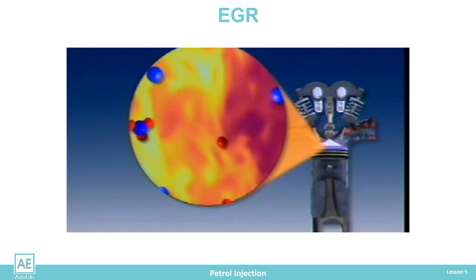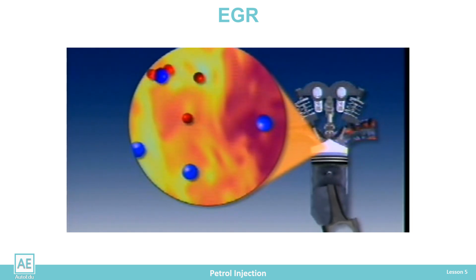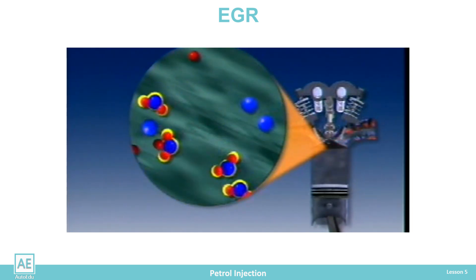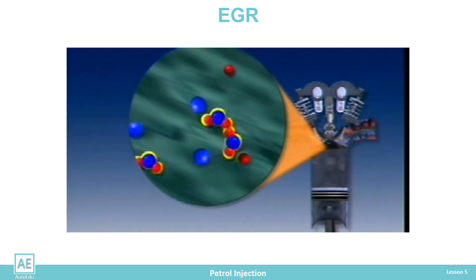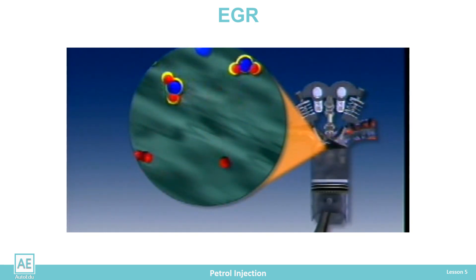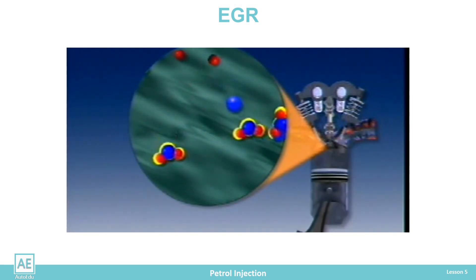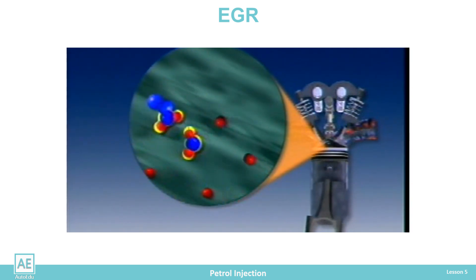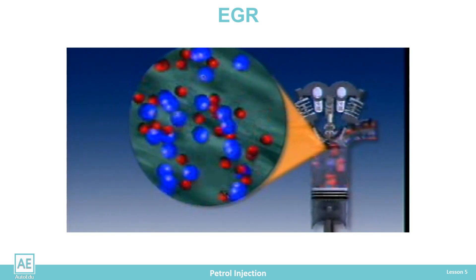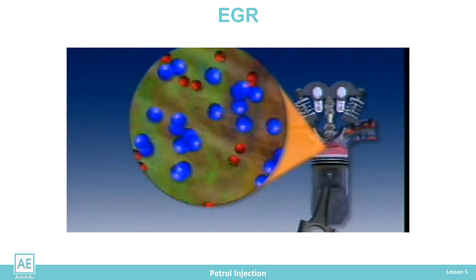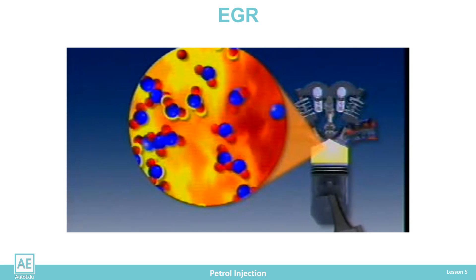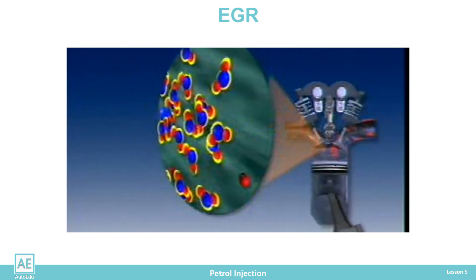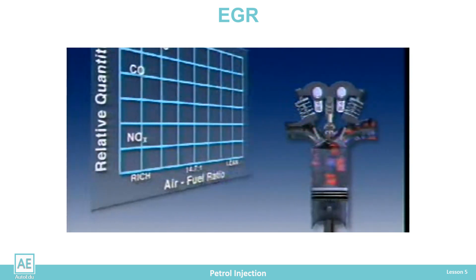The exhaust gas recirculation EGR system is designed to control nitrogen oxides. This harmful component increases its share in the exhaust gas when the temperature and pressure are elevated during the combustion of the mixture in the cylinder.